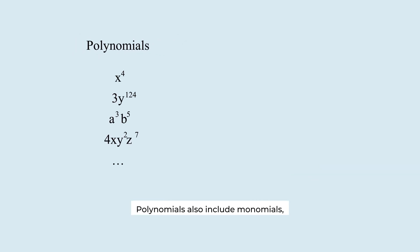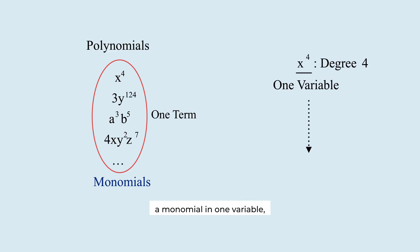Polynomials also include monomials, expressions with just one term. In x to the power of 4, the degree is 4. When the expression is a monomial in one variable, the exponent and the degree are the same.